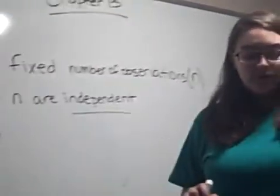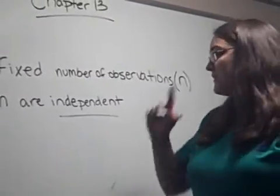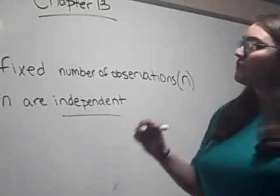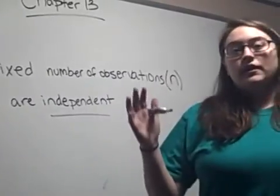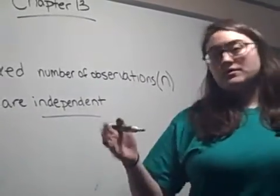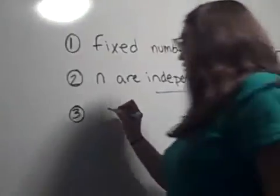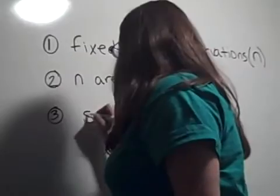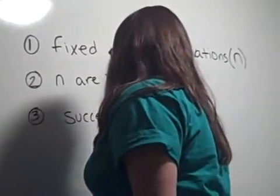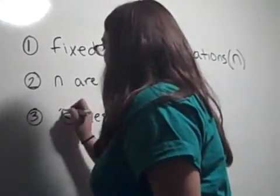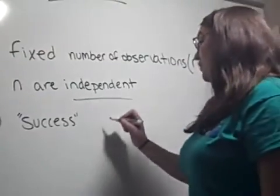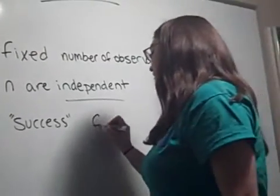The third rule is that the observations can be categorized into two different groups — one would be success, and the other one would be failure.